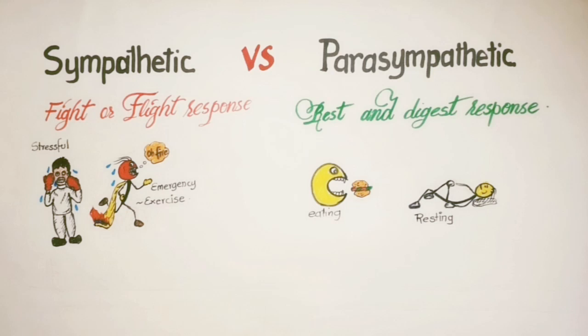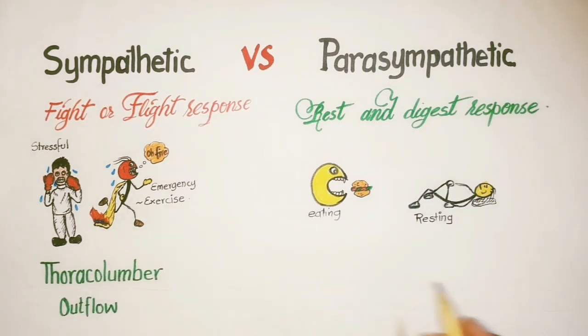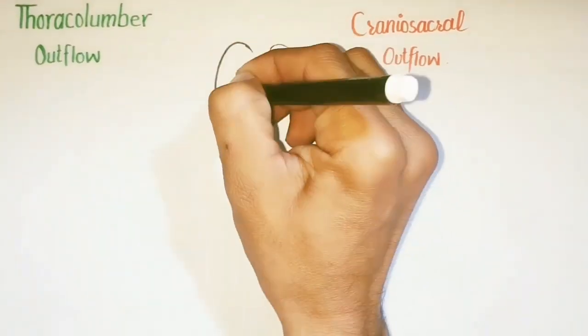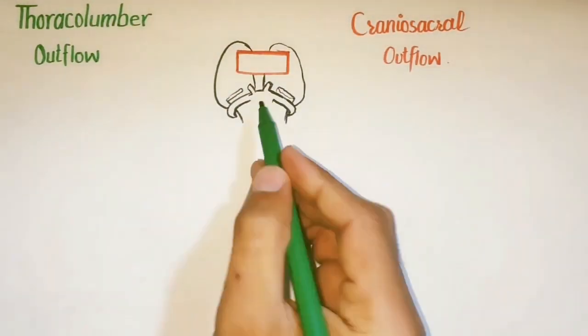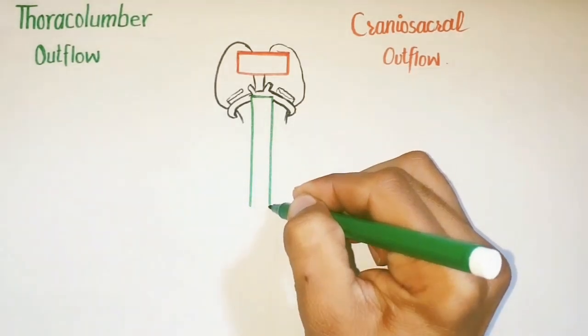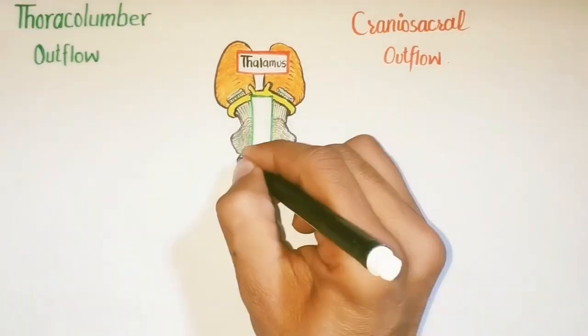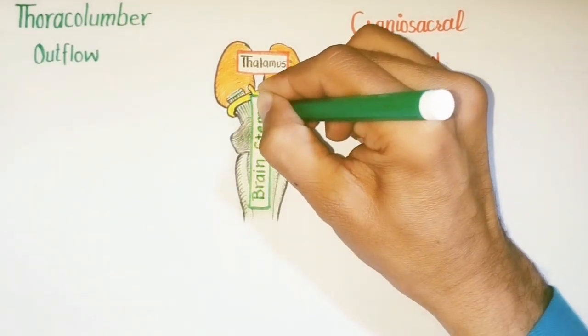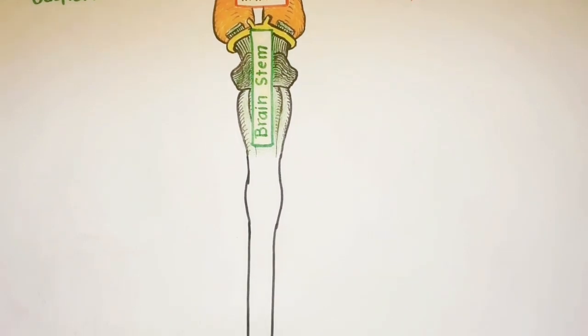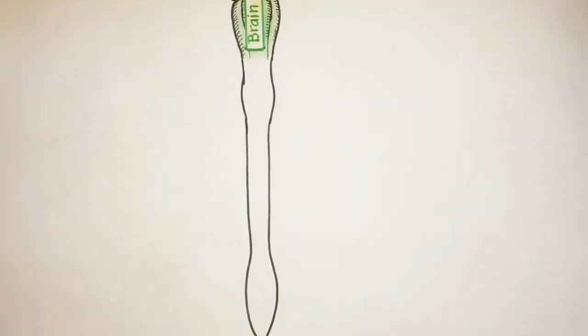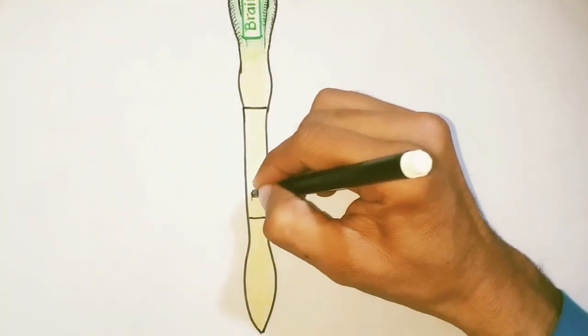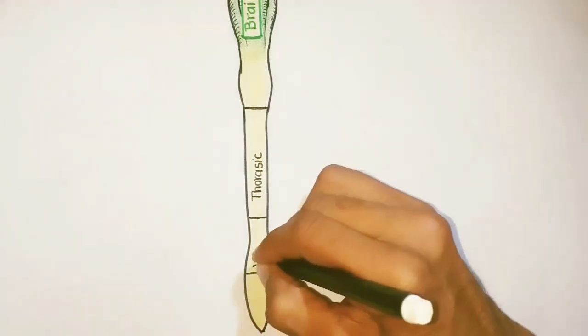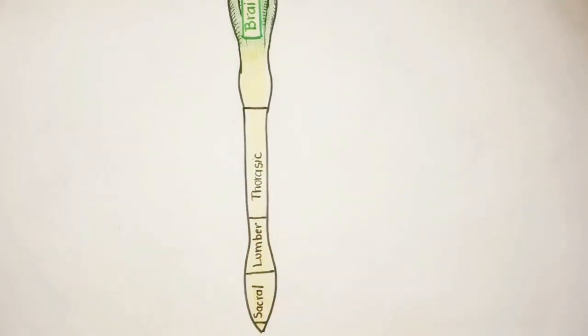In addition, the sympathetic division is also known as thoracolumbar outflow, while the parasympathetic division is called the craniosacral outflow. For this, here I am drawing the brainstem and spinal cord. This is thalamus, part of the forebrain, and this is the brainstem which I colored with green. Here is the spinal cord which I colored with yellow. This is the thoracic segment, this is the lumbar, and this is the sacral segment of spinal cord.